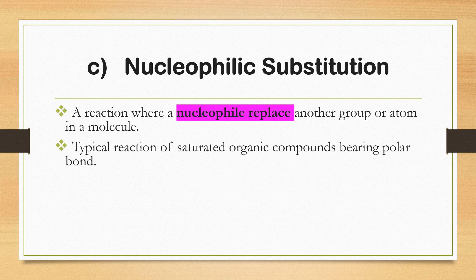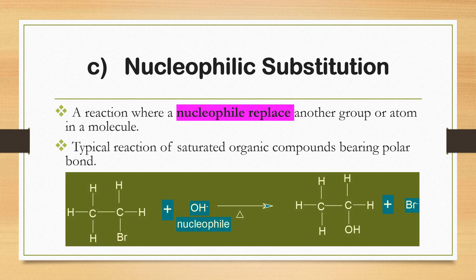Nucleophilic substitution is a reaction where a nucleophile replaces another group or atom in an organic molecule. It is the typical reaction of saturated organic compounds bearing a polar bond. For example, in a haloalkane, the bromine atom attached to the carbon is replaced by the hydroxide ion (OH⁻), which acts as the nucleophile. This is called nucleophilic substitution.